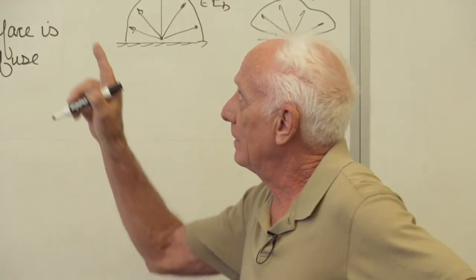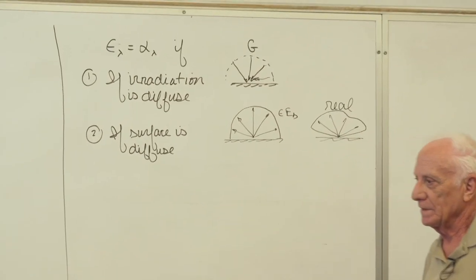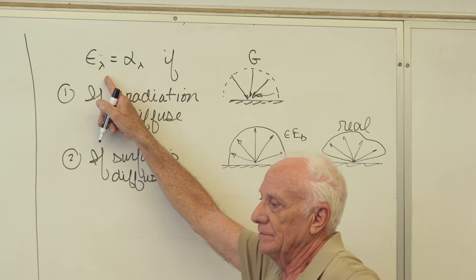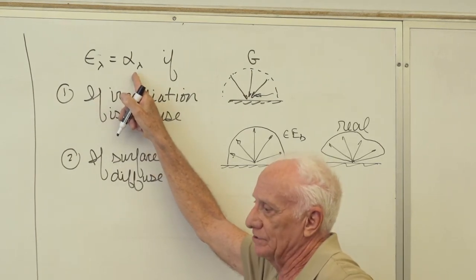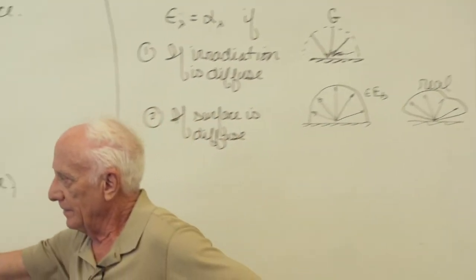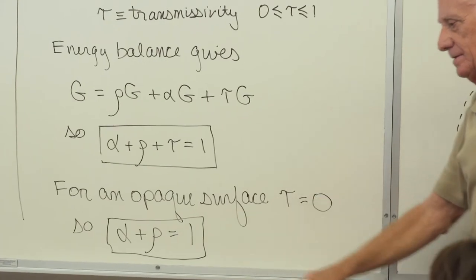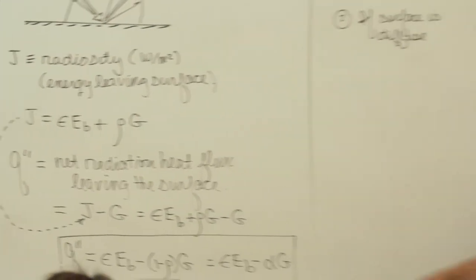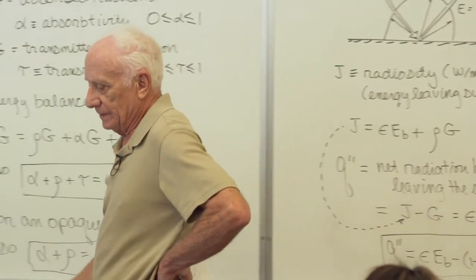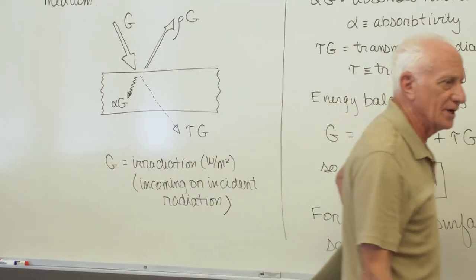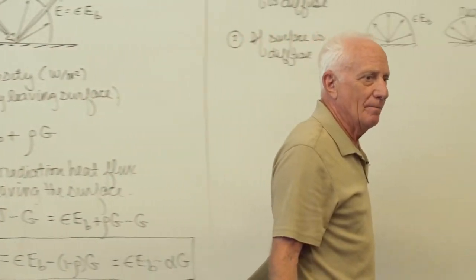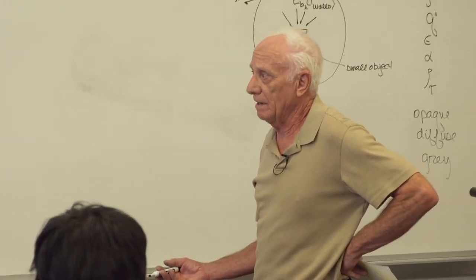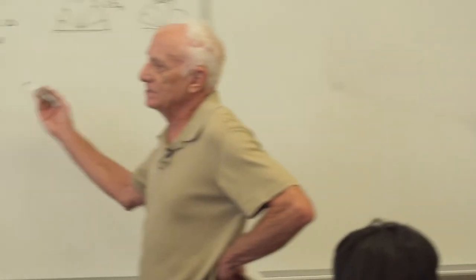Sometimes people will give you a graph of these properties as a function of wavelength. This tells us we can equate these two. If we're given a graph of epsilon lambda versus lambda, we can interpret that as a graph of alpha lambda versus lambda. So it relates the properties. If you want to find the emissivity of all kinds of surfaces, it's in the appendix: stainless steel, copper, polished aluminum, snow, sand, skin, whatever. That's where you can find some of the properties.